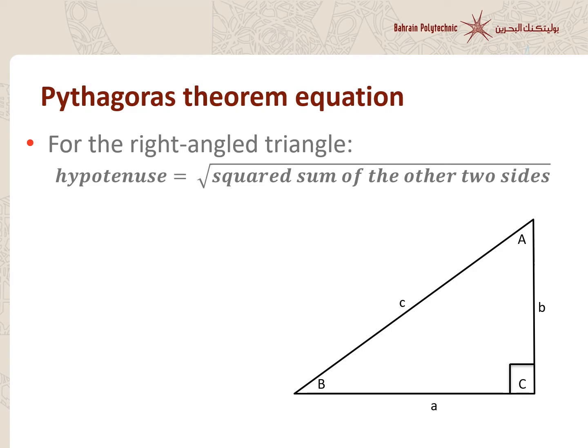If we look at this triangle, based on our definition, c is the hypotenuse — we can identify it by looking at the opposite angle. You can see that side c is opposite to the 90-degree angle, which is angle C. So if we apply this to the equation, we say: hypotenuse c is equal to the square root of a squared plus b squared. That is the form of this theorem.